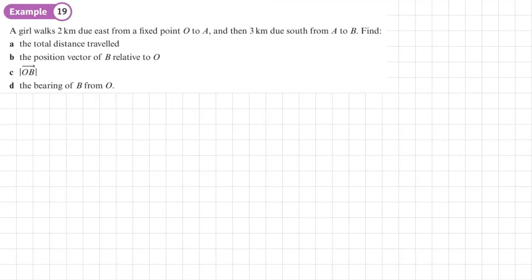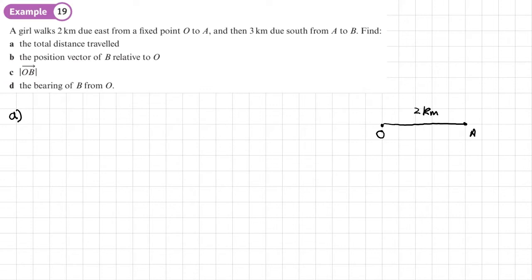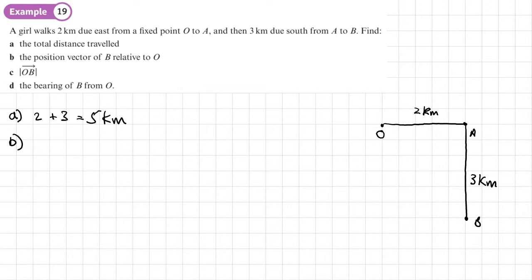Example 19: a girl walks two kilometers due east from a fixed point O to A, and then three kilometers due south from A to B. Find the total distance traveled. Draw a diagram - she starts at O, walks two kilometers east to point A, then three kilometers south to B. Total distance is just two plus three: five kilometers.